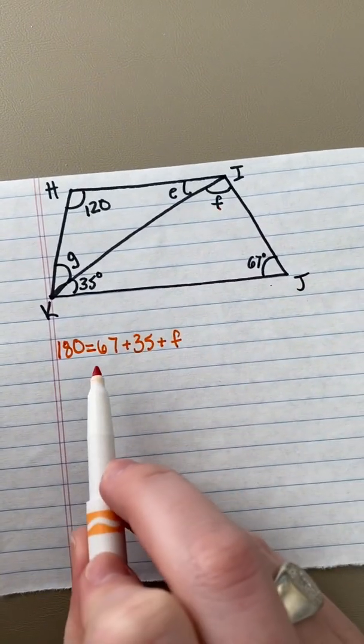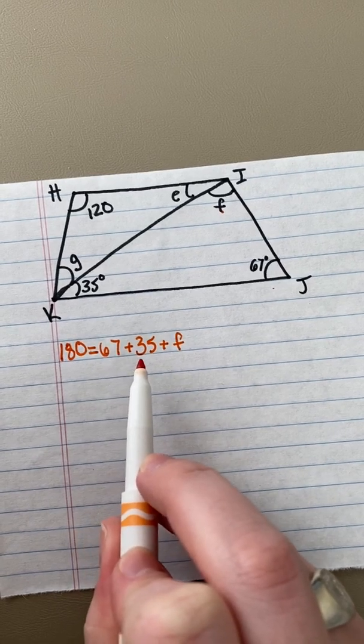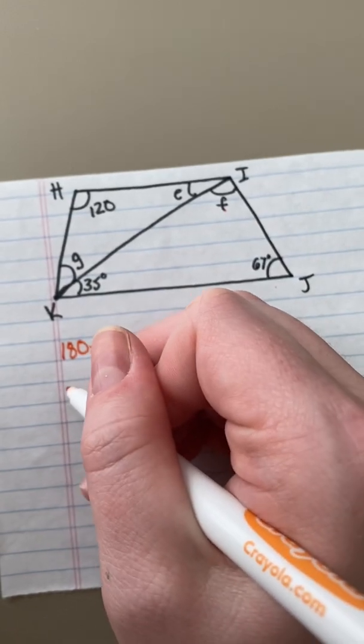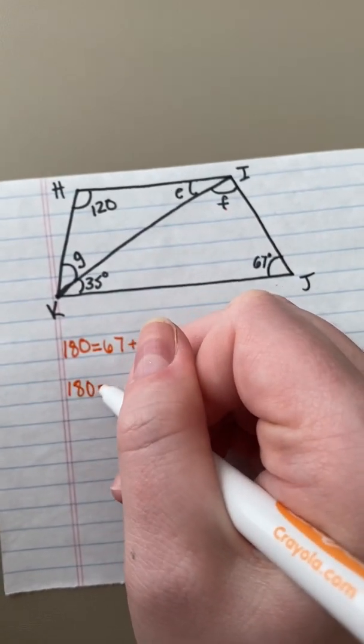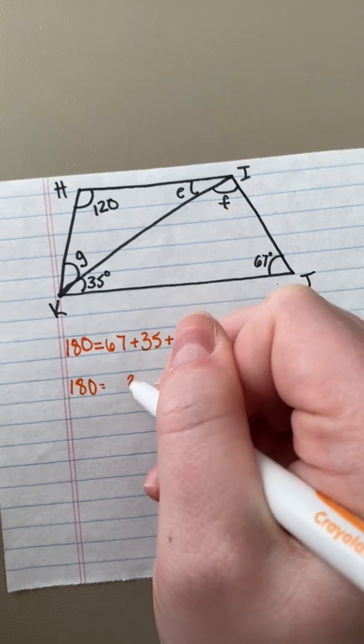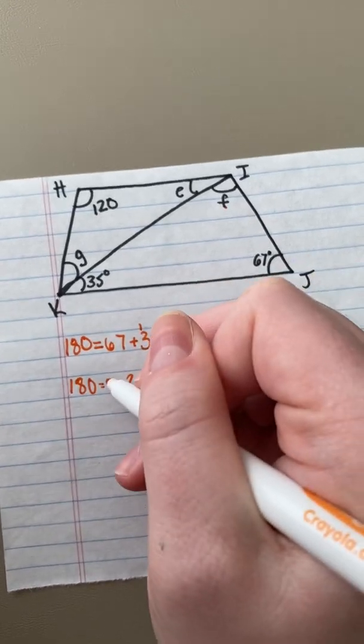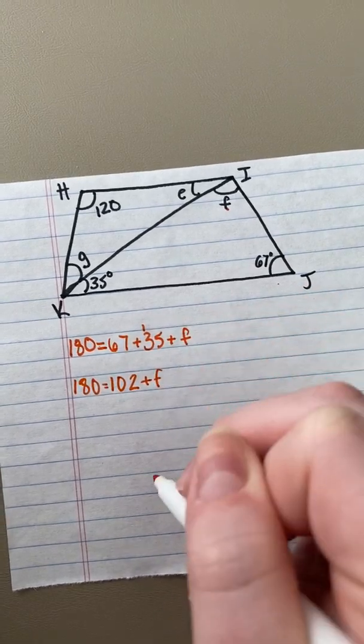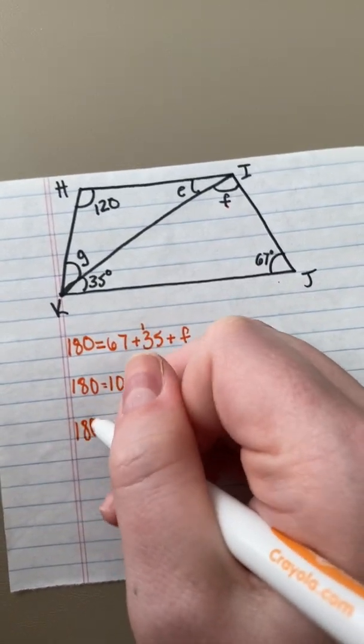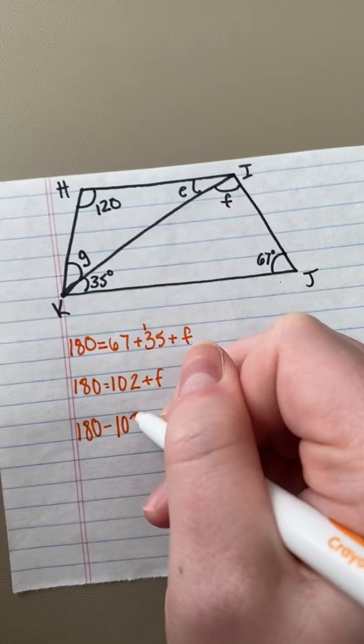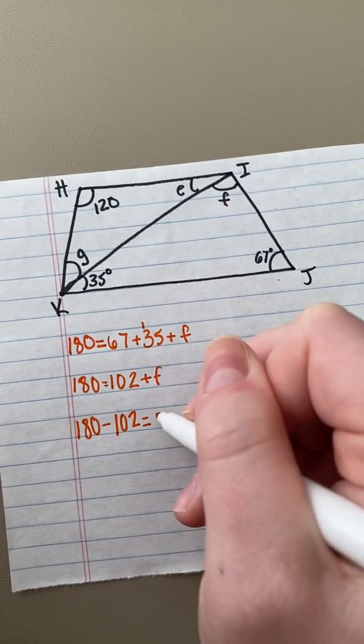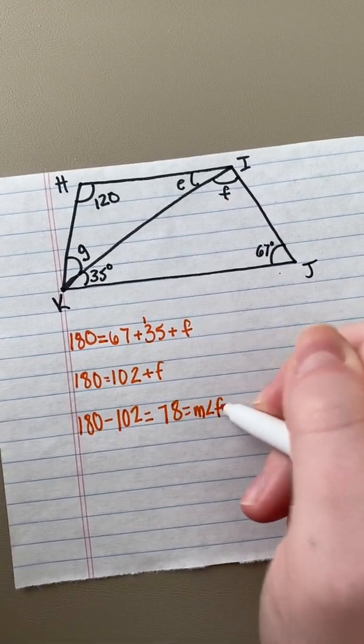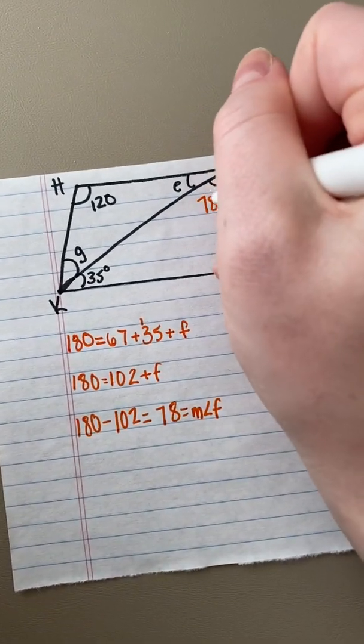In this case, we have an angle that equals 67 degrees, 35 degrees, and then the unknown angle F. So when I go to solve this, 5 and 7 is 12, regroup one of my 10s, and I get 102 degrees plus the measurement of angle F. When I subtract 180 and 102, that gives me 78 for the measurement of angle F. So I'm going to go ahead and add that in here.